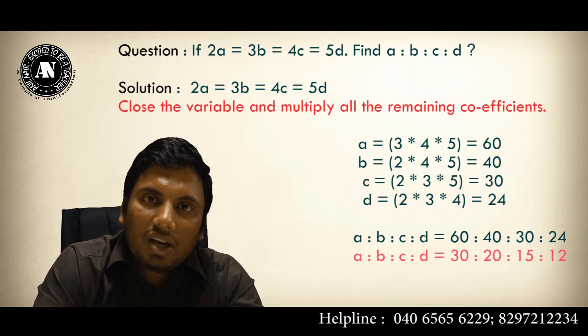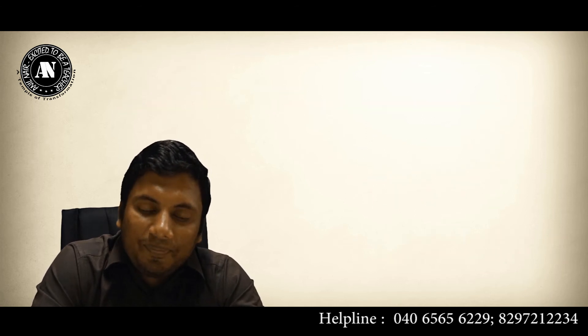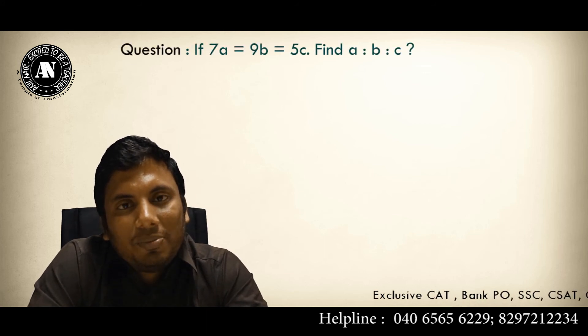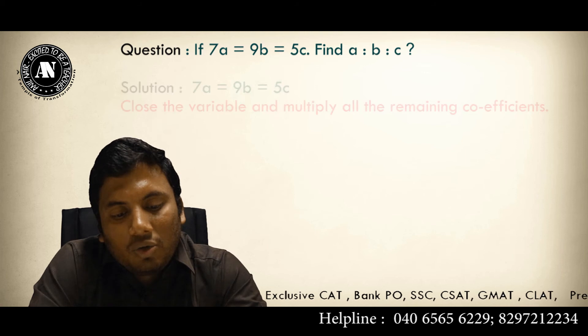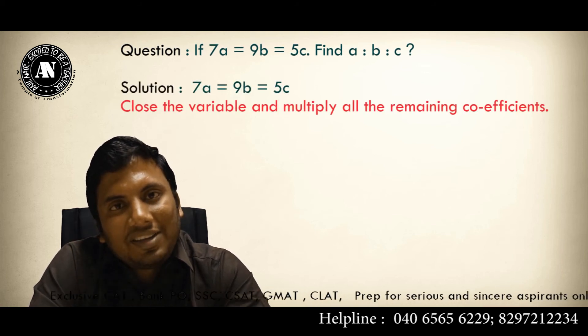I hope you have understood the logic. Now, kindly do not use pen and paper. Try to solve the question: 7A equivalent to 9B equivalent to 5C. Find A is to B is to C. Step number one, to get A, close A. Multiply all the remaining coefficients: 9 times 5 is 45.